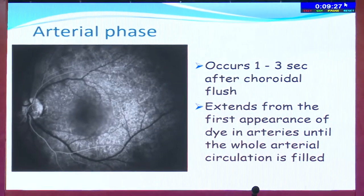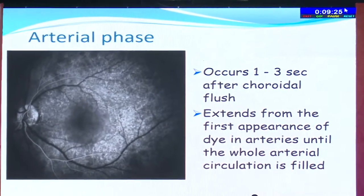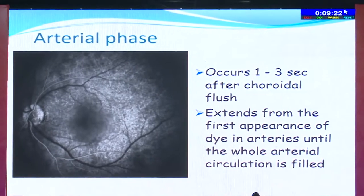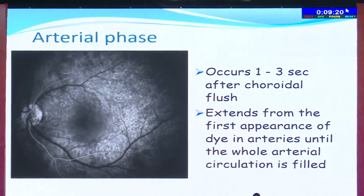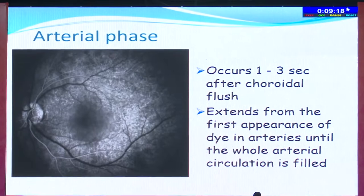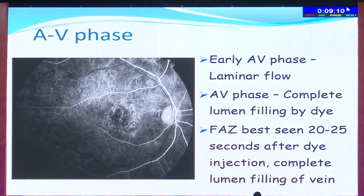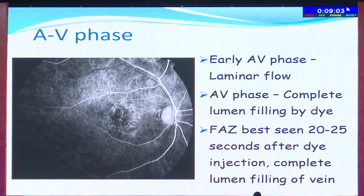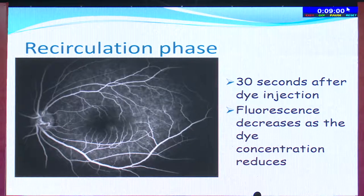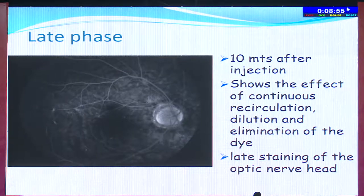Following the choroidal phase, you have the arterial phase, which occurs 1 to 3 seconds after the choroidal flush, and it extends from the first appearance of the dye in the arteries until the whole arterial circulation is filled. This is followed by the arteriovenous phase, where in the early phases you have laminar flow, and the foveal avascular zone is best seen during this phase. Then comes the recirculation phase at about 30 seconds, and the late phase at about 10 minutes after injection.